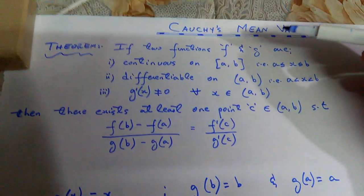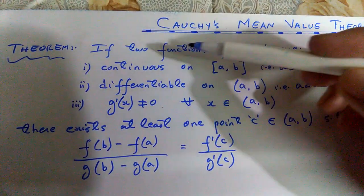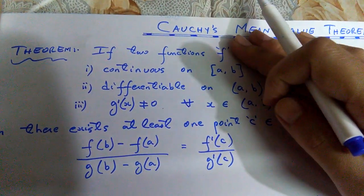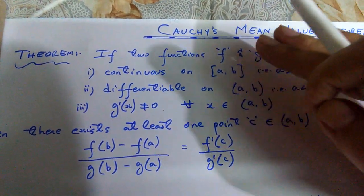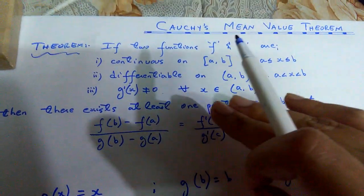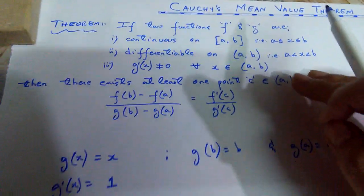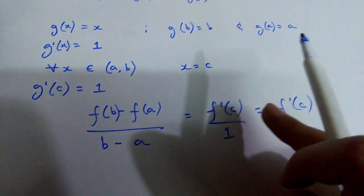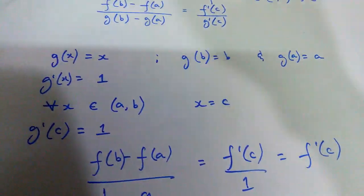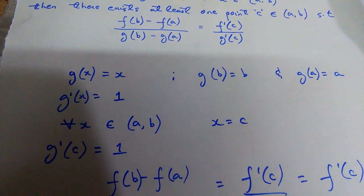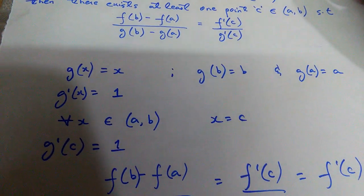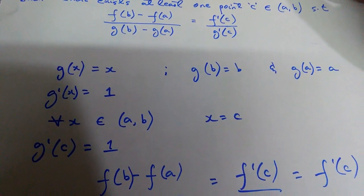According to Lagrange's Mean Value Theorem, if you have a function f that is continuous on a closed interval [a, b] and differentiable on the open interval (a, b), there exists at least one point c in the open interval (a, b) such that f'(c) equals [f(b) minus f(a)] over [b minus a]. That's exactly what Lagrange's Mean Value Theorem states, and its link is in the description box.